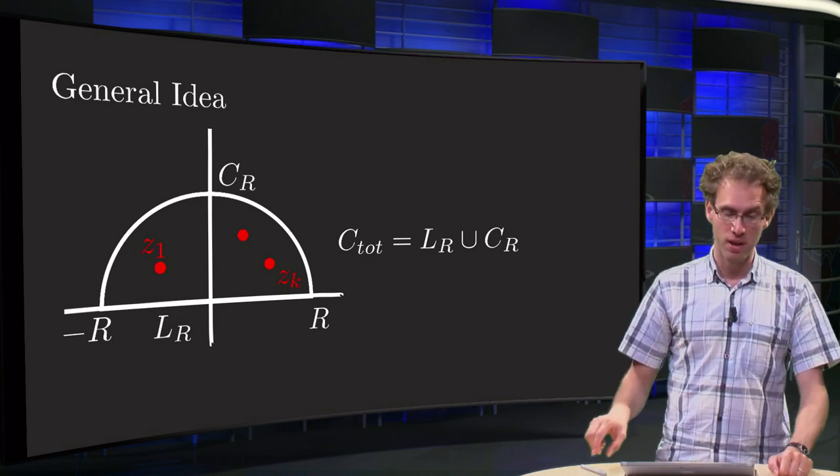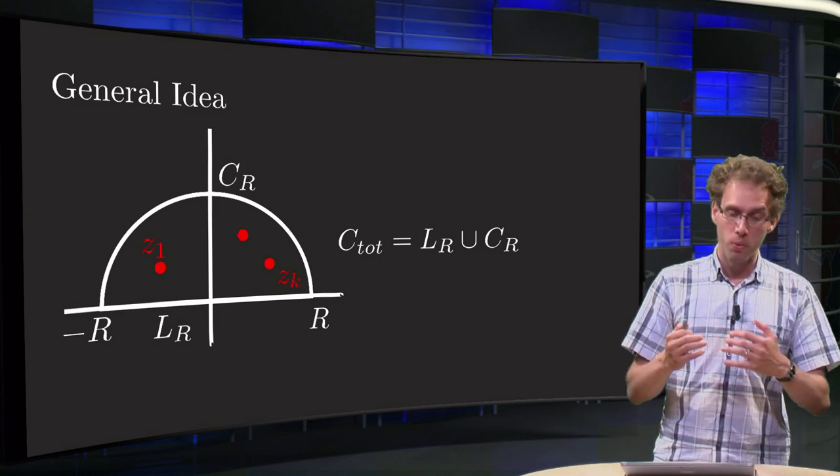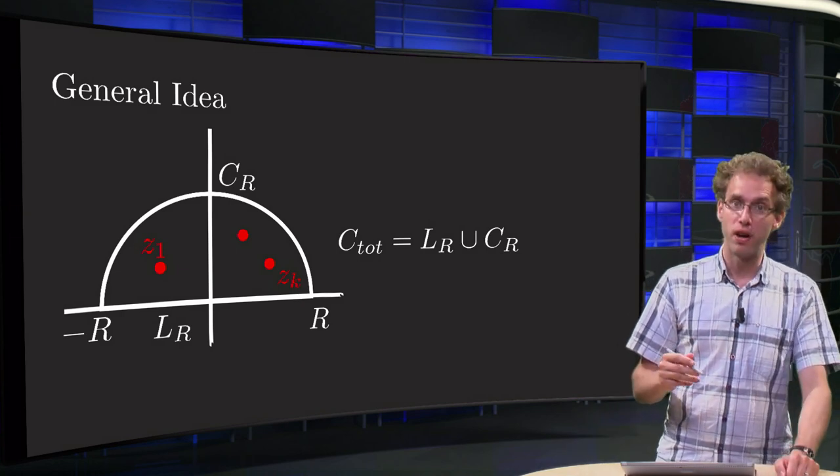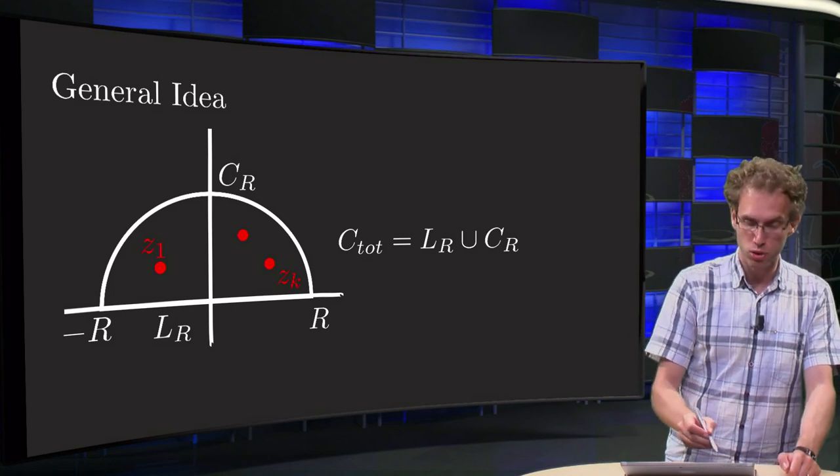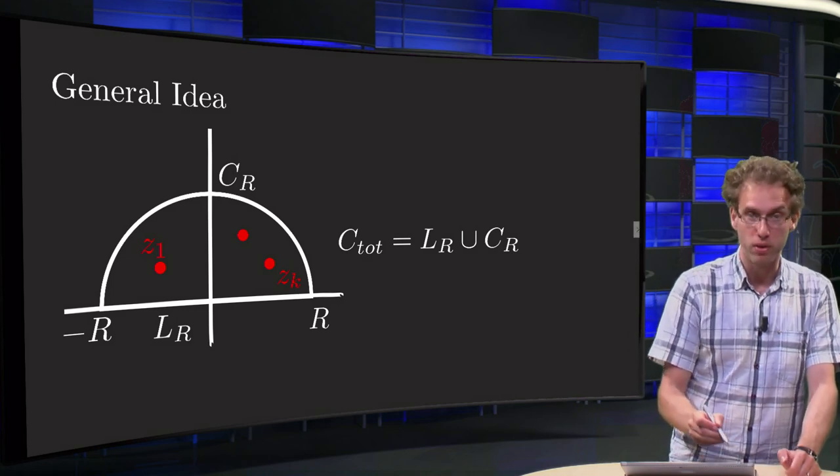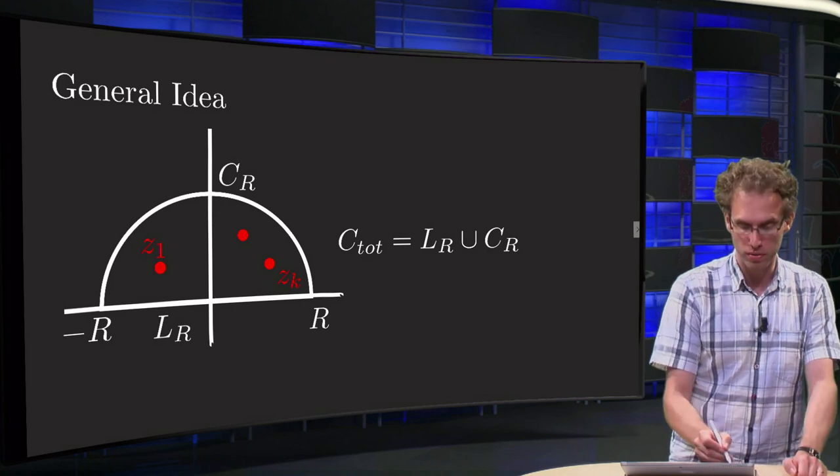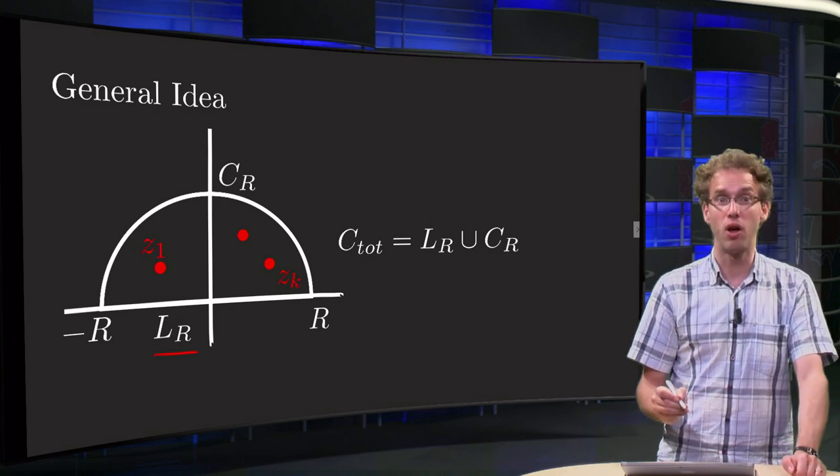So what's the idea? We will have some contour which usually consists of the whole real axis or part of the real axis that is called LR.